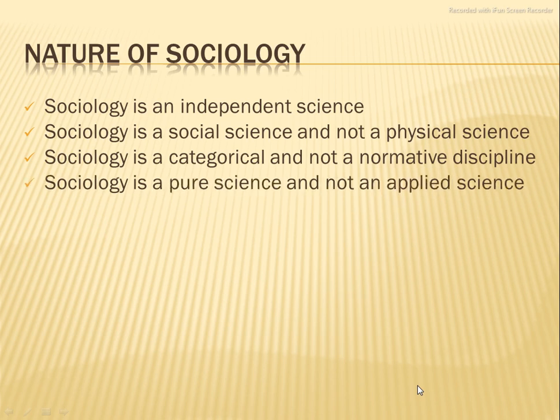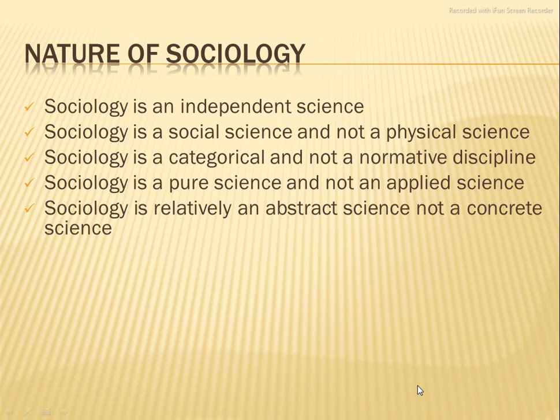Sociology is a pure science and not an applied science — it cannot be applied directly. It is a pure science. For example, a person who went to live in a place adopted the culture there and became part of it. That means they had a pure origin, something developed from somewhere, and they organized and developed themselves in a systematic manner.